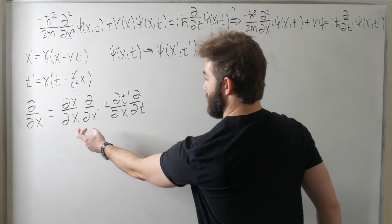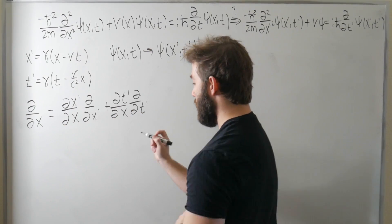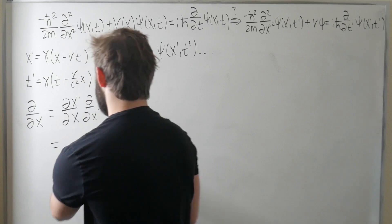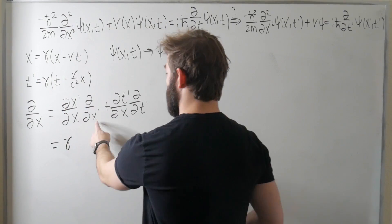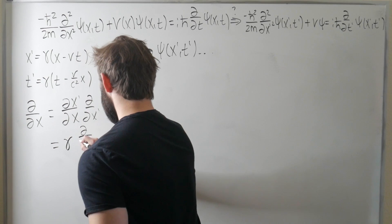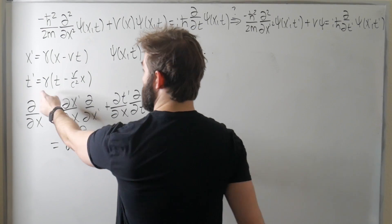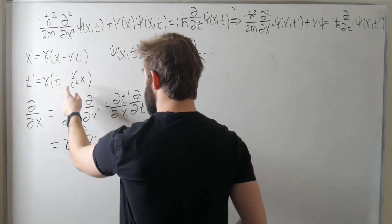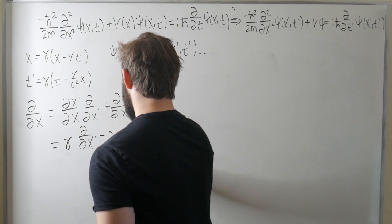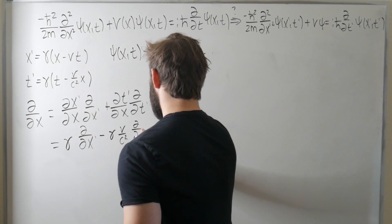So we got this. Now let's calculate our transformation coefficients, which we can get from the Lorentz transform. So this is equal to dx prime dx. That's what's going to give us a factor of gamma times d dx prime. And then we've got dt prime dx, dt prime with respect to x is going to give us a minus gamma v over c squared, so minus gamma v over c squared, d over dt prime.